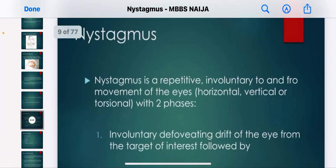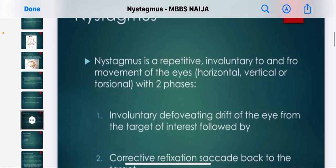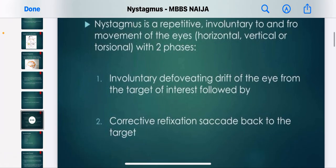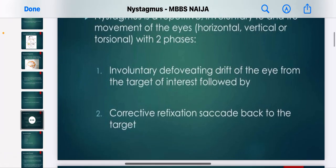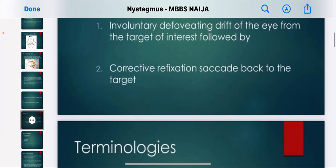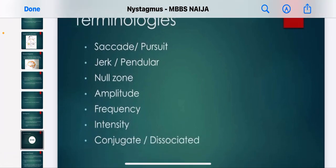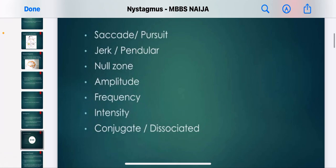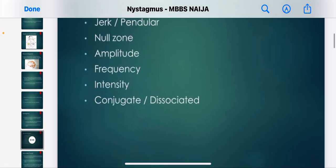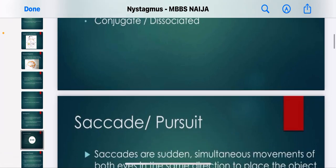Nystagmus is a repetitive, involuntary to-and-fro movement of the eyes, either horizontally or vertically, with two phases. The involuntary de-foveating drift of the eye from the target of interest is followed by a corrective fixation saccade back to the target. Terminologies used include saccade, pursuit, jerk, pendular, null zone, amplitude, frequency, intensity, and conjugate.